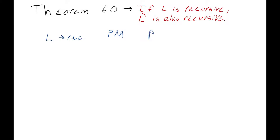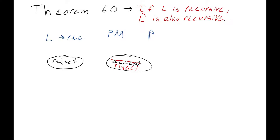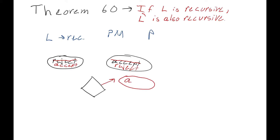We take all the states that go to accept, cross out the word accept, and make it reject. Then we take all the states that say reject and make them say accept instead. Then we take all the hidden crashes — where a post machine might crash if there's no edge to take for the given letter it's reading — and add those states back in, making them go to an accept state. So essentially we're reversing all the accepts to become rejects and all the crashes or rejects to become accepts.